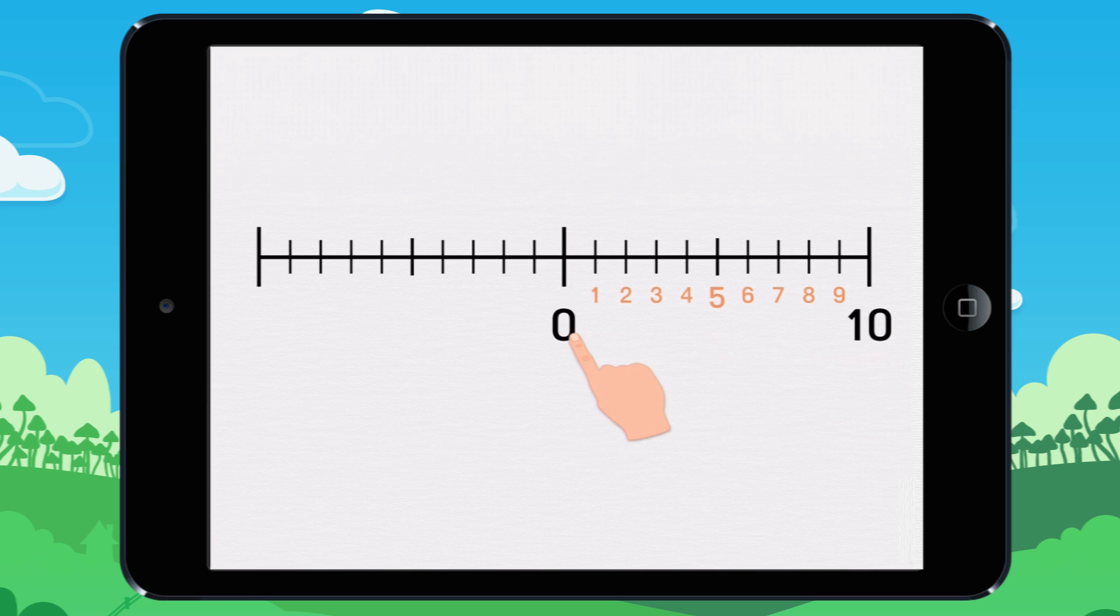Let's go back to zero. If you count by ones from right to left, you have to use negative numbers. Watch this.